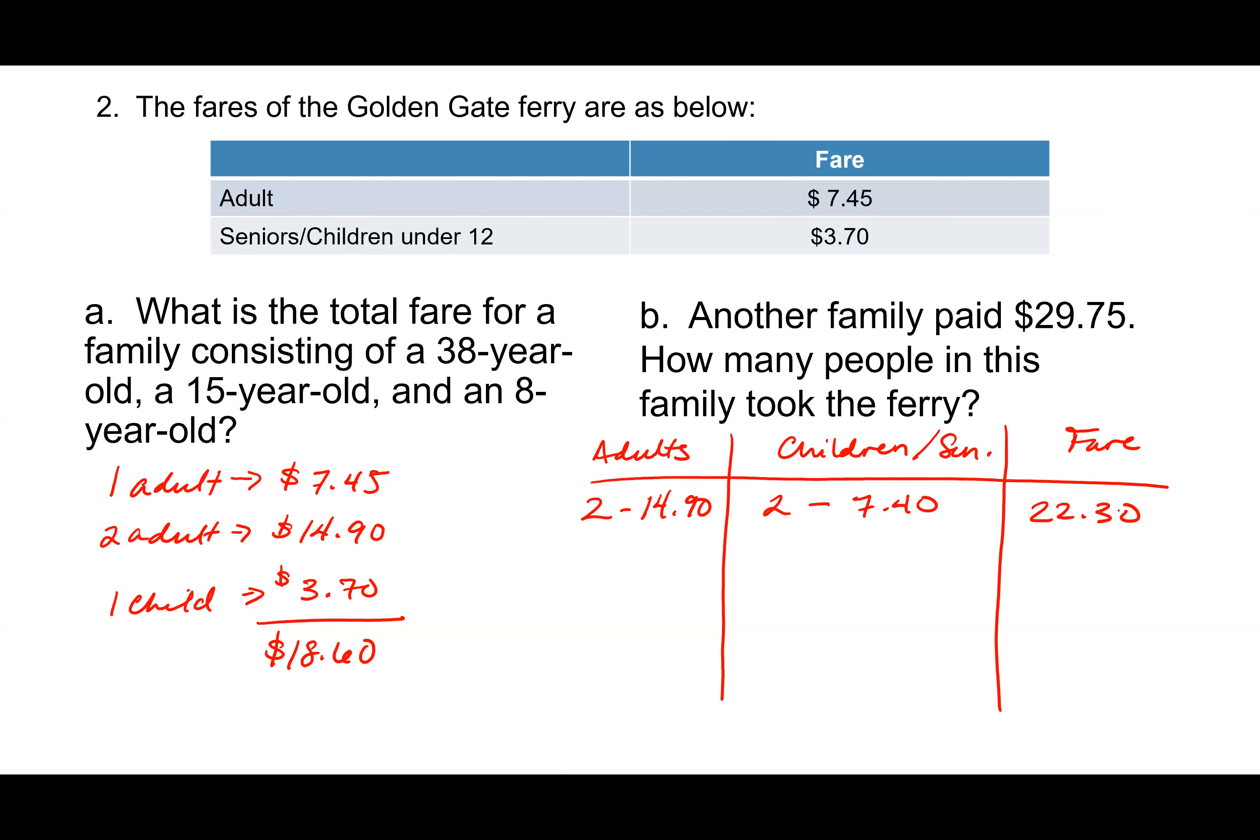So you could have done something like this. You could have made a chart and you could have done, I would have started somewhere around two adults, two kids, just guesstimating, right? Two adults would have cost $14.90. Two children or seniors would have cost $3.70 times two. So what is that? $7.40. And $14.90 plus $7.40 would have been $22.30. So that's less than our $29.75. So then I would have been three adults $22.35 plus two children $7.40. And we would have had $29.75. So yeah, that's a guess and check problem. Three adults, two children were correct.